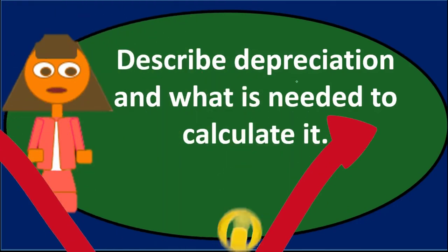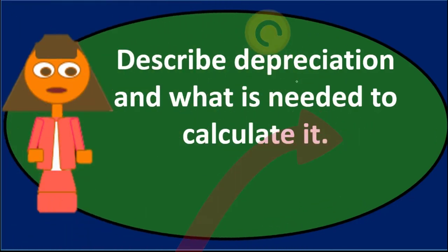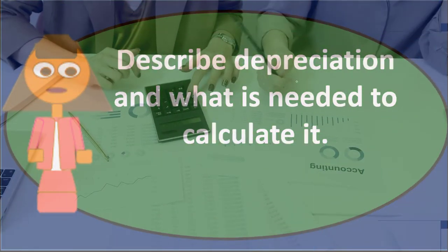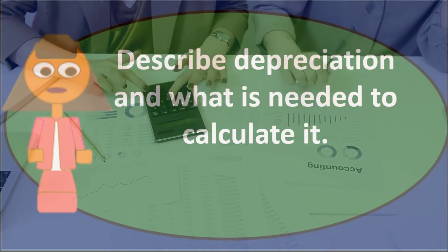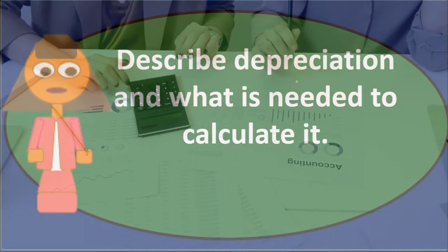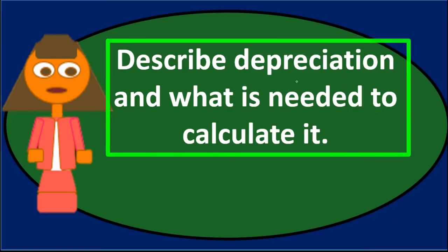Expenses always pretty much go up with a debit and that'll bring net income down. So when we record depreciation, what are we doing? We're allocating a cost of the equipment and we're decreasing the net income. We're increasing an expense and decreasing net income.